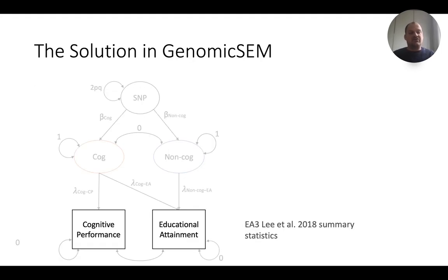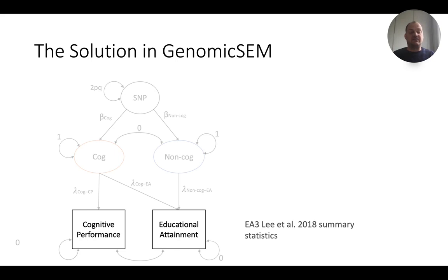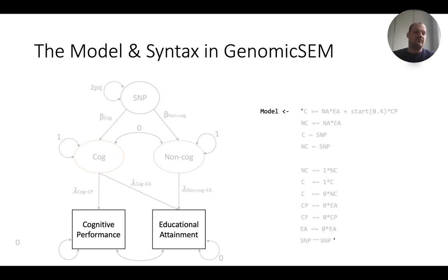The solution in Genomic SEM we came up with is a GWAS by subtraction. It basically takes two observed variables — two GWAS summary statistic files for cognitive performance and educational attainment — as made available publicly by the SSGAC. These are the educational attainment 3 GWAS summary statistics, Lee et al. 2018, and they're publicly available. We can translate the model to syntax for use in Genomic SEM and walk through it step by step.